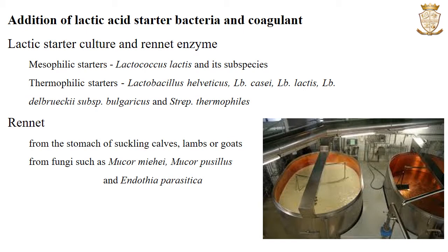Next is the enzyme rennet. Rennet is a preparation from the fourth stomach or abomasum of suckling calves, lambs or goats. It contains the proteolytic enzyme rennin or chymosin, which cleaves K-casein. K-casein is a type of casein protein important in maintaining the colloidal stability of milk proteins. Cleavage of K-casein causes the casein protein to become unstable and it will aggregate in the presence of calcium ions to form a gel, which entraps fats and forms white creamy lumps known as the curd.